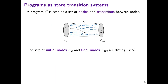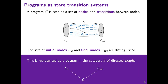First, let's look at programs. We will interpret them as state transition systems, which are just a set of nodes and a set of transitions between those nodes, as well as a set of initial nodes, depicted on the left of the picture, and a set of final nodes, depicted on the right. A path from an initial node S to a final node S' is just a trace. This will be represented as a cospan in the category of directed graphs, where the support C contains the transitions of the code, and C-in and C-out contain the initial and final nodes, respectively.